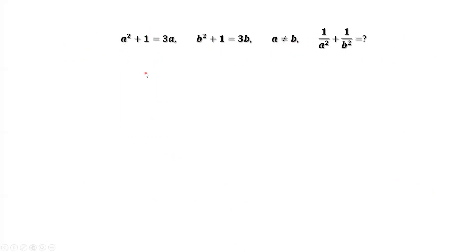From the first given condition, we move 3a to the left hand side. Then we have a squared minus 3a plus 1 equals 0.